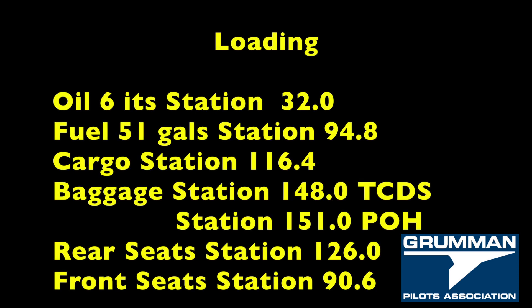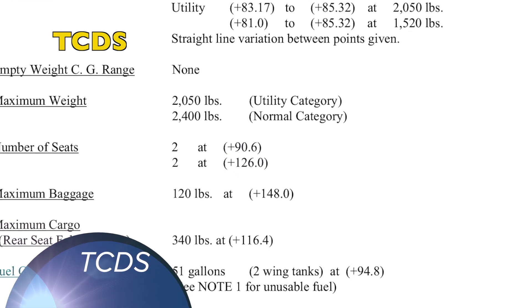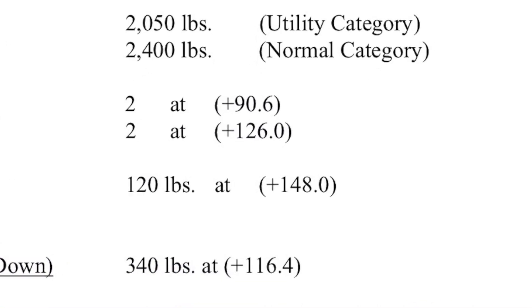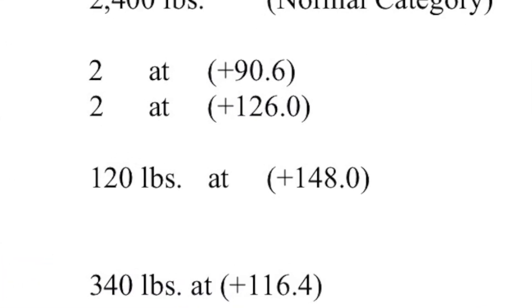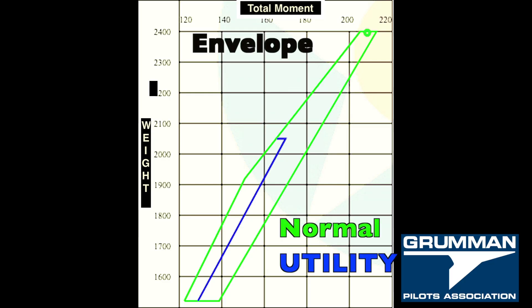If you want to do the math yourself, here are all the really important stations. You'll notice that the pilot operating handbook for the Tiger says baggage station 151, when it's actually station 148 by the type certificate. But the whole purpose of the CG is again to make sure that your aircraft is in an operable range — you're inside the envelope.